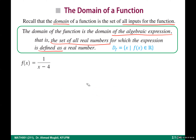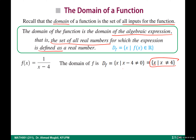Example: f(x) = 1/(x−4). The denominator x − 4 must not be zero, so x ≠ 4. The domain is all real numbers except 4, written as (−∞, 4) ∪ (4, ∞). Example: g(x) = √x. What is inside the square root must be non-negative: x ≥ 0. Domain is [0, ∞).